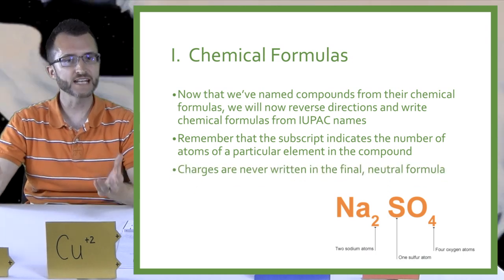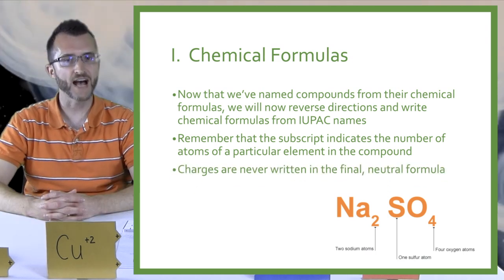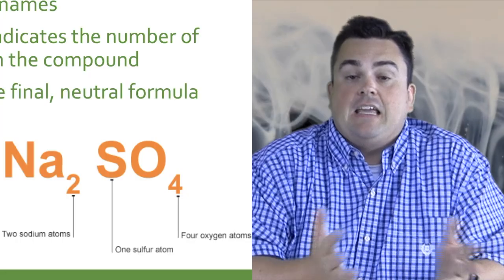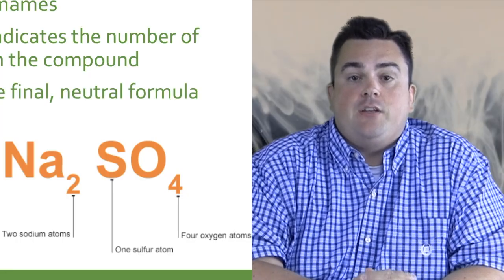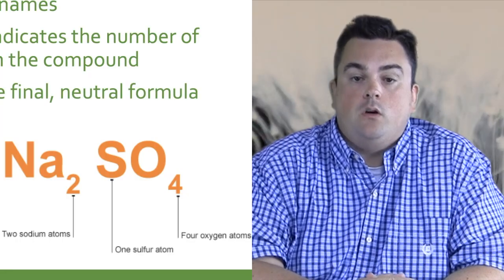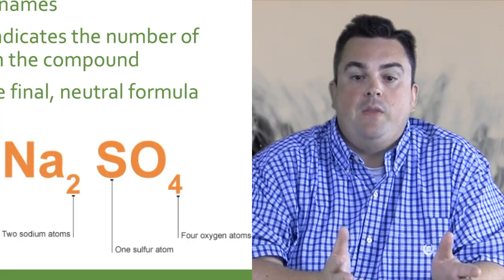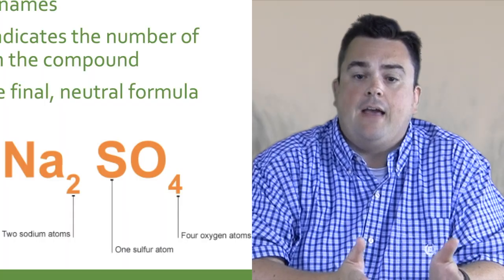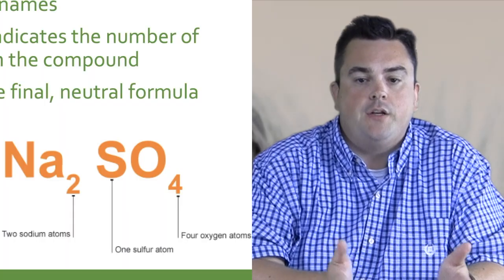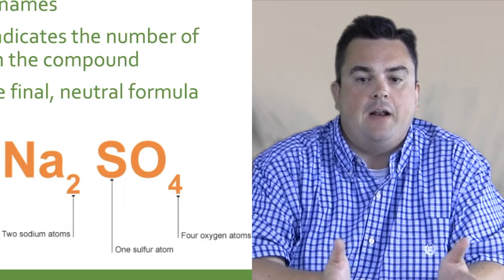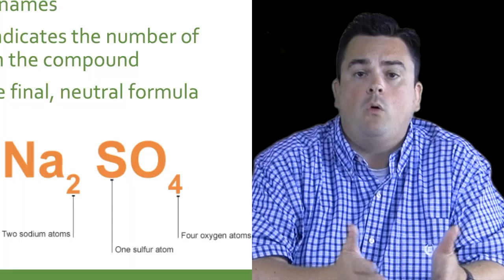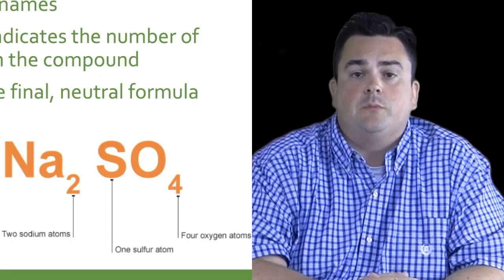Charges are never written in the final neutral formula. Taking a look at our example here, we have Na2SO4. We should remember that we only have two Na atoms, one sulfur atom S, and four O or oxygen atoms.